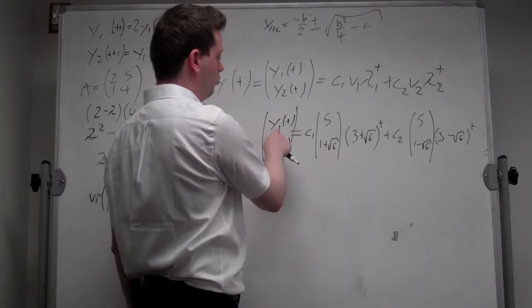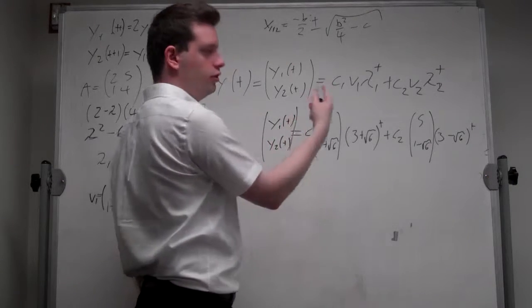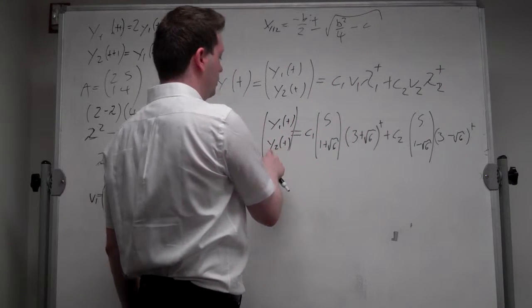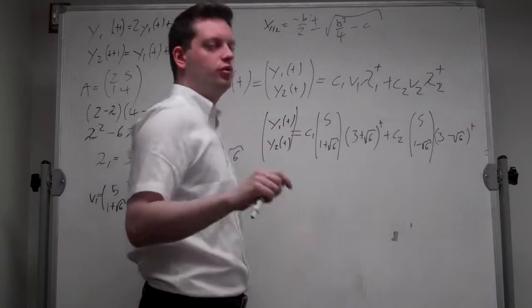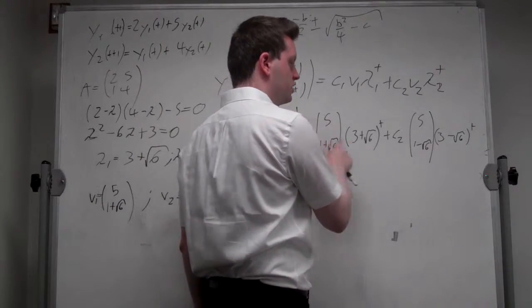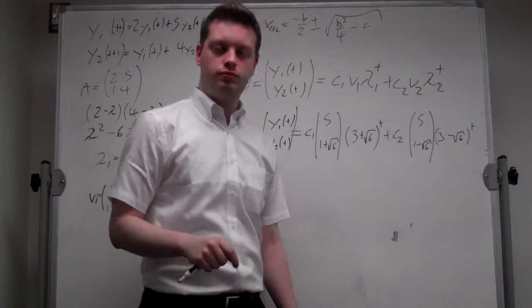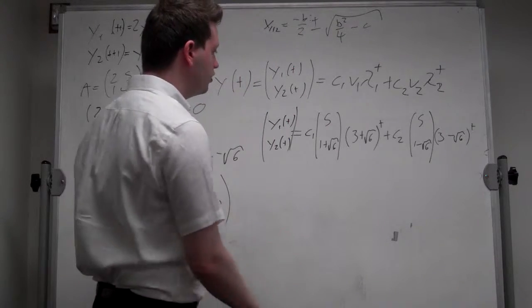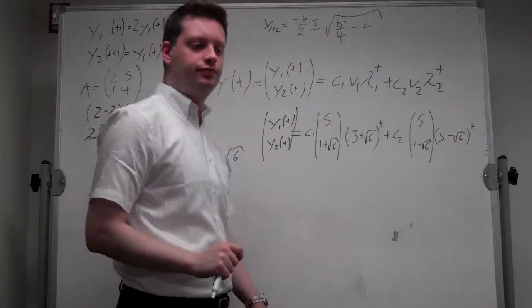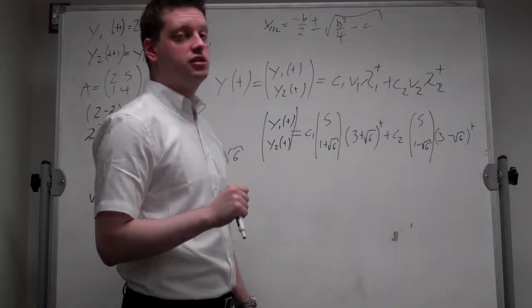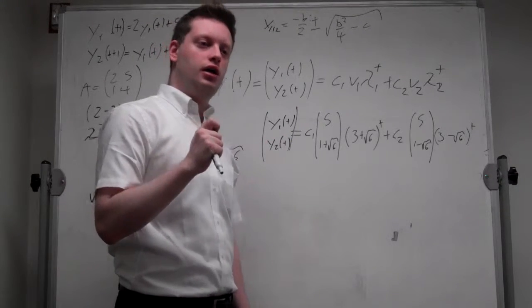So, for example, y_1(0) is equal to some constant, and y_2(0) is equal to some other constant. And with that, you can find c_1 and c_2. Okay, now that we've found this general solution, let's draw the system in a phase diagram.